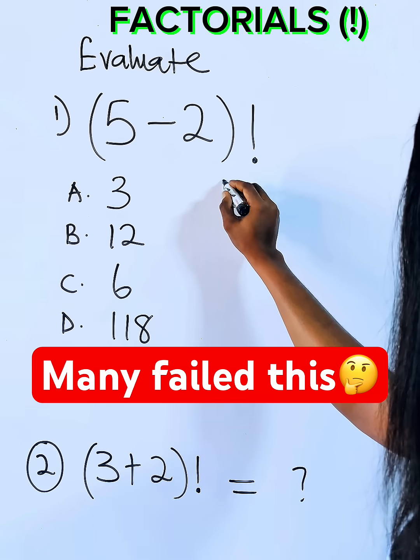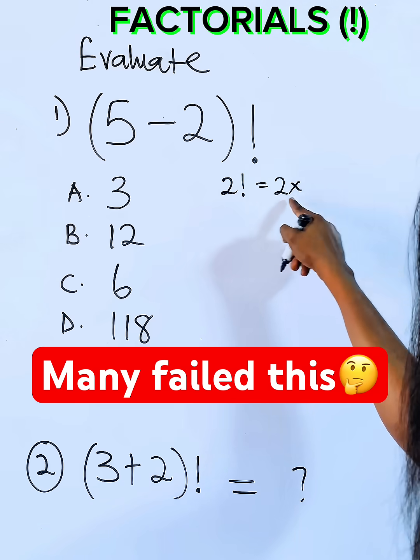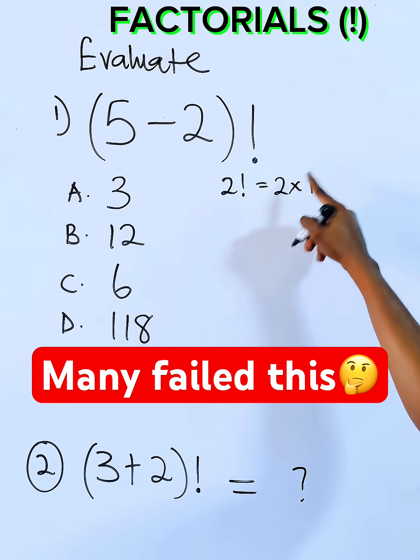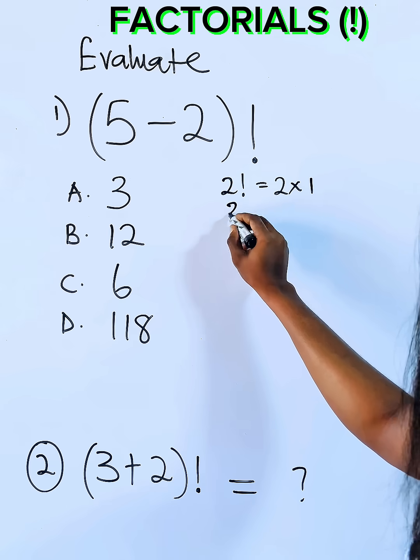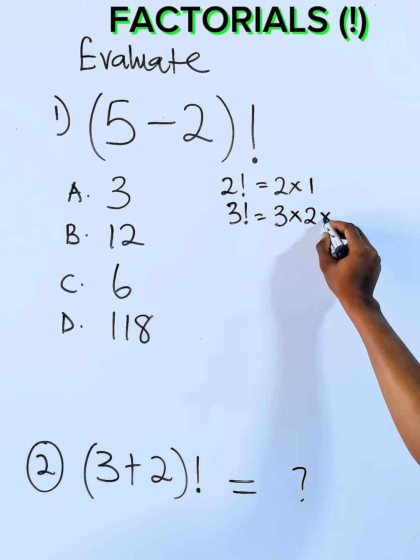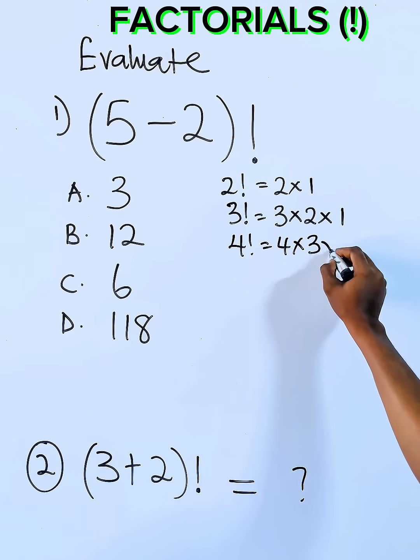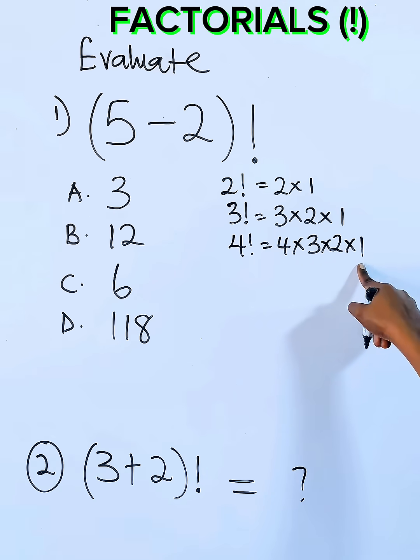You decrease two by one and you multiply what you decreased. You stop at one. When you have three factorial, you have three times, you decrease, two, you decrease again, one, stop it at one. When you have four factorial, it is four times three times two, stop it at one.